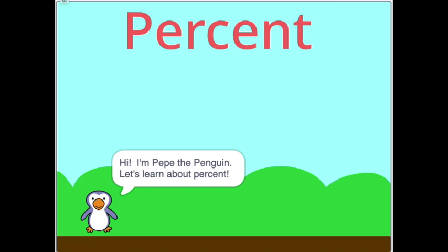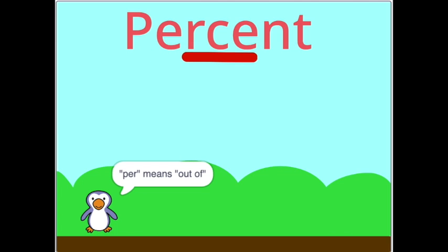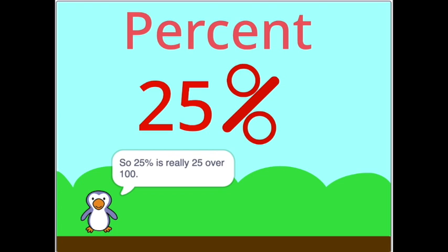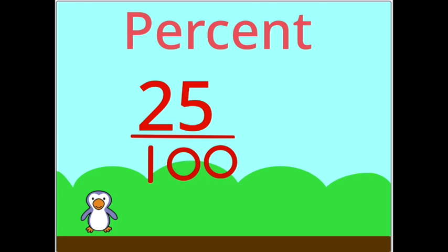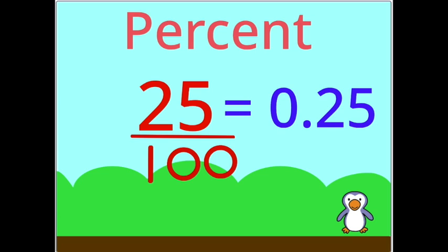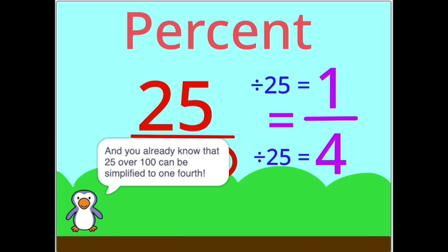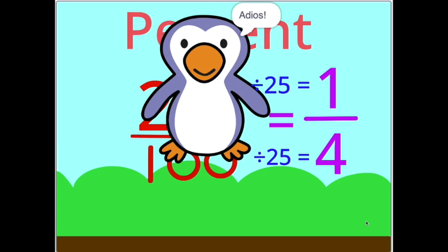Hi, I'm Pepe the Penguin. Let's learn about percent. Per means out of and cent means 100. So 25% is really 25 over 100. Then it's easy to convert that into a decimal: 25 over 100 equals 0.25. And you already know that 25 over 100 can be simplified to one-fourth — divide by 25, divide by 25, and you get one-fourth. Adios!